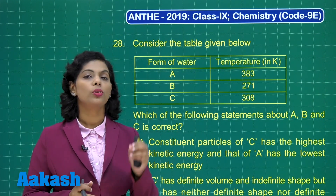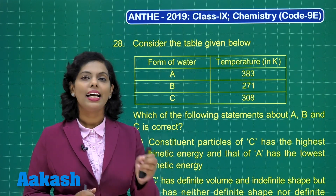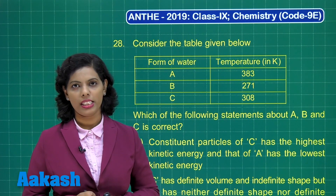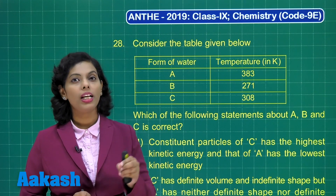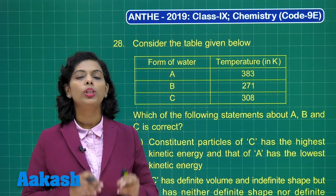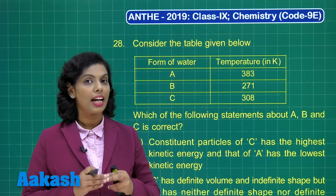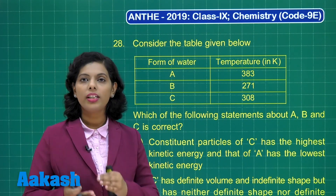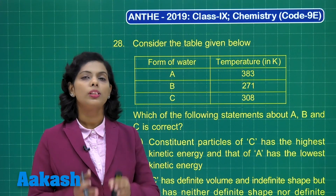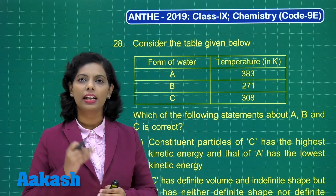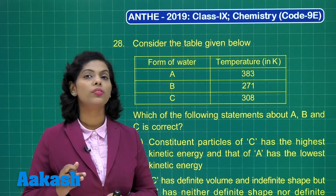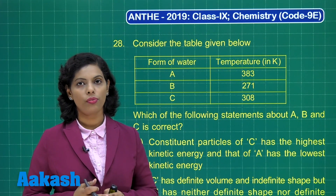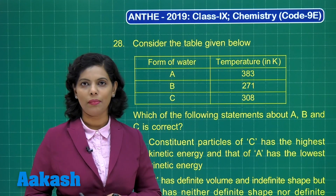In the solid state, it is called ice and the melting point of ice is 0 degree Celsius. Similarly, the boiling point of water is 100 degree Celsius, and specifically at 100 degree Celsius, we obtain the gaseous state of water, that is steam.